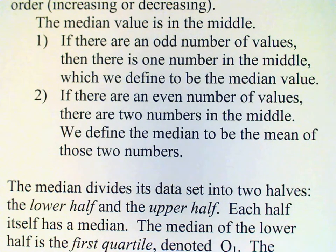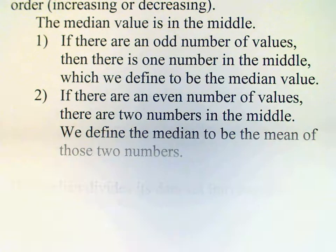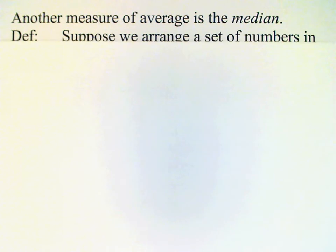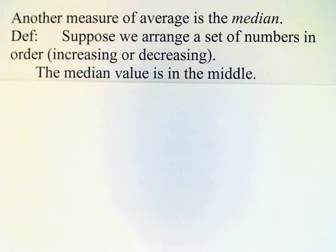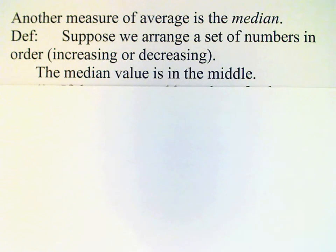One thing we can do is to use a different measure, and that measure is known as the median. To come up with a median, we need to arrange our data set in order — either in increasing order or in decreasing order — and then the median value is the value in the middle.